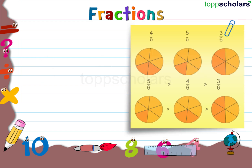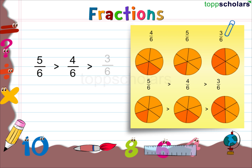This brings us to the conclusion that if two fractions have the same denominators, the fraction having the greater numerator represents the greater fraction. For example, 5 by 6 is greater than 4 by 6, which is greater than 3 by 6.